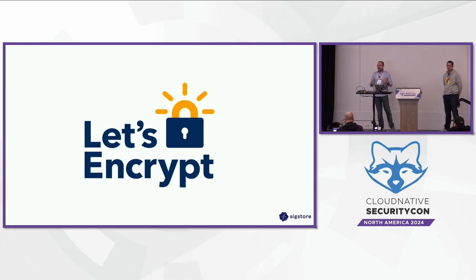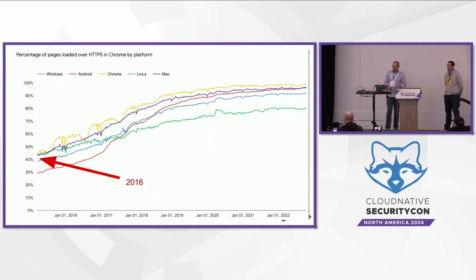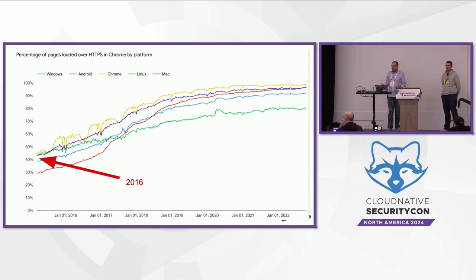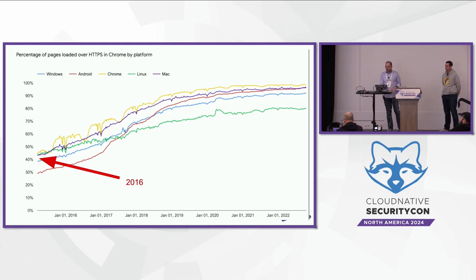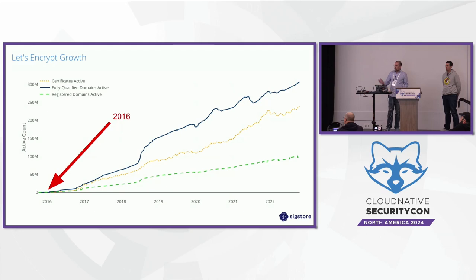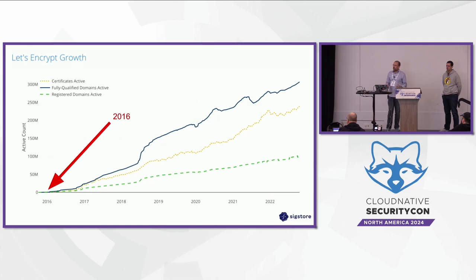Then came along a group called Let's Encrypt, and they solved the issue of UX. They made it very simple — you could automate it, and it was free. Anybody could get a certificate, whether a large corporation or a hobbyist developer. Around 2016, a majority of websites ran unprotected, and then there's this nice upward trend getting close to 100% of websites running over HTTPS. Let's Encrypt was released in 2016, and you can see that trend. It made certificates a lot more accessible for hobbyists, community, and people without the financial means to purchase SSL certificates.